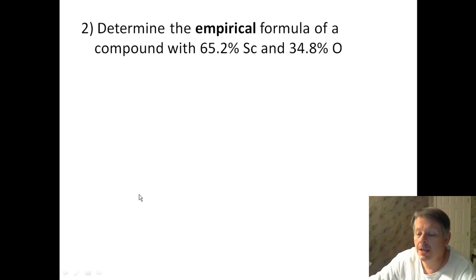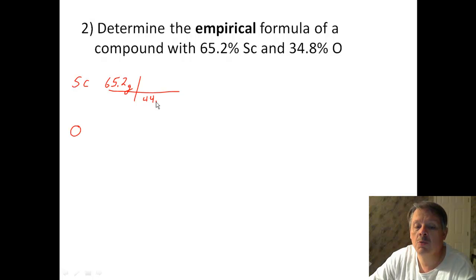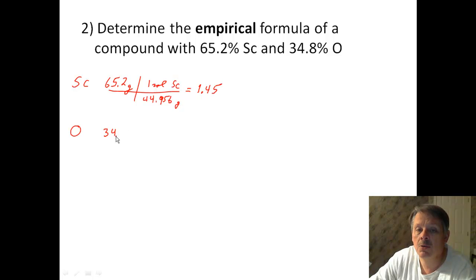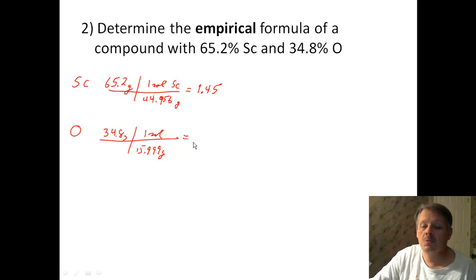Alright, let's go on to number 2. Number 2, again, I'm giving percentages. So I'm going to assume that those percentages are simply grams. So for scandium, I have 65.2%. So I'm going to treat that as grams. And I'm going to look up on my periodic table what scandium weighs. And it's 44.956 grams in one mole of scandium. So when I multiply that out, I get 1.45. And I do exactly the same thing for oxygen at 34.8 grams. And I divide by 15.999 grams in one mole. And that gives me 2.18.